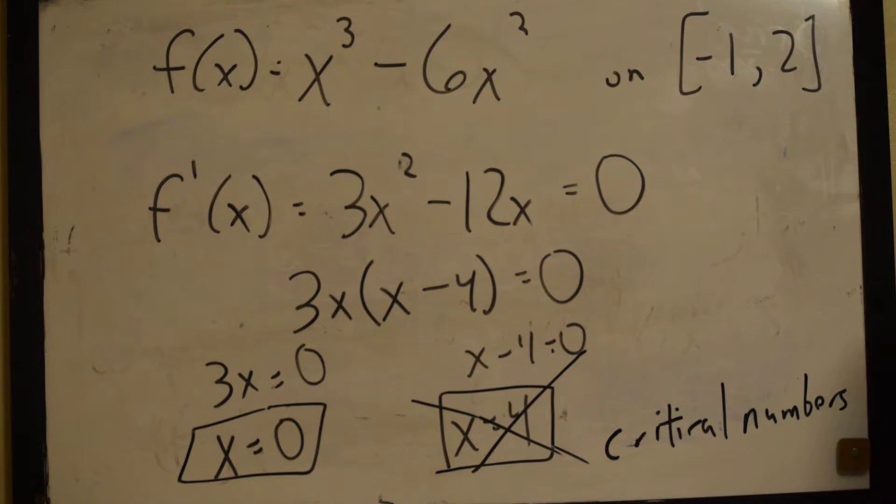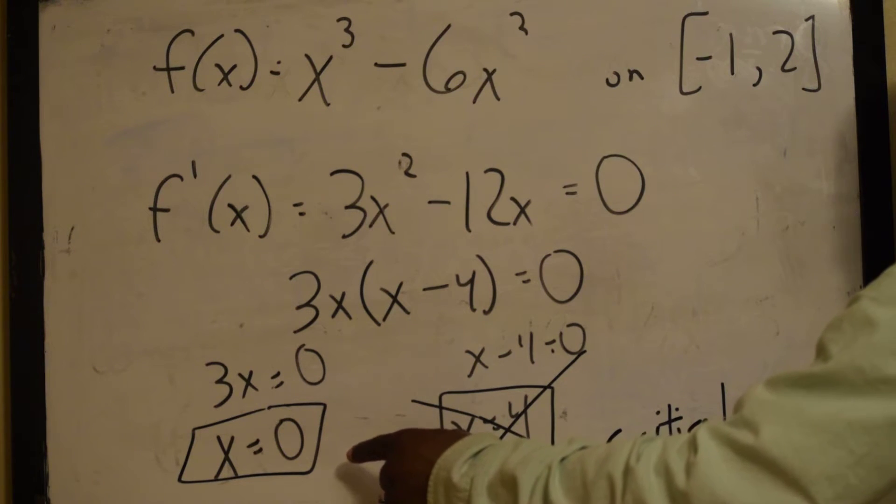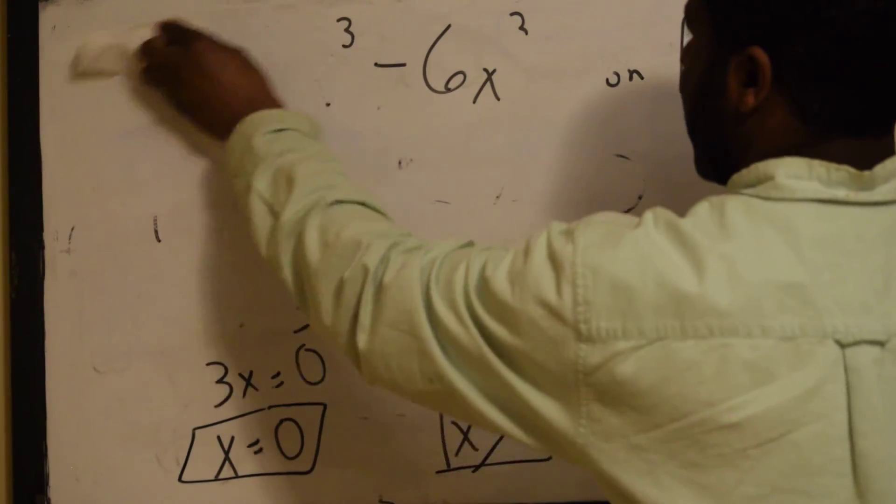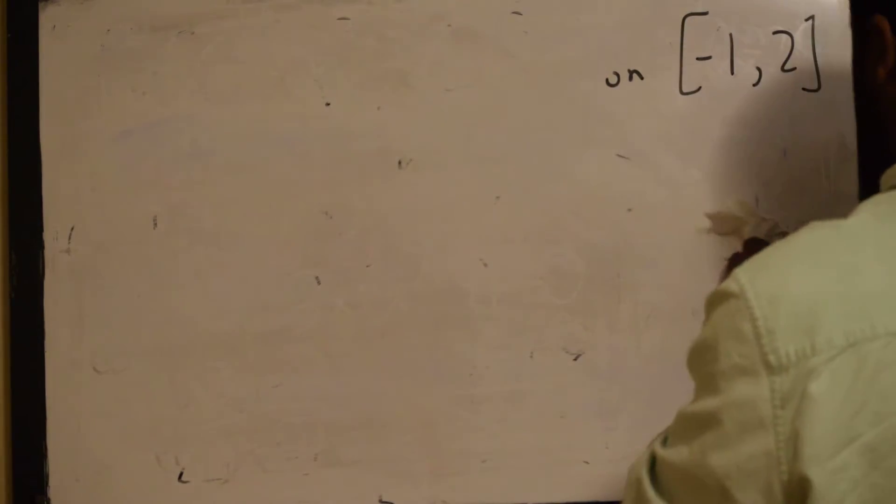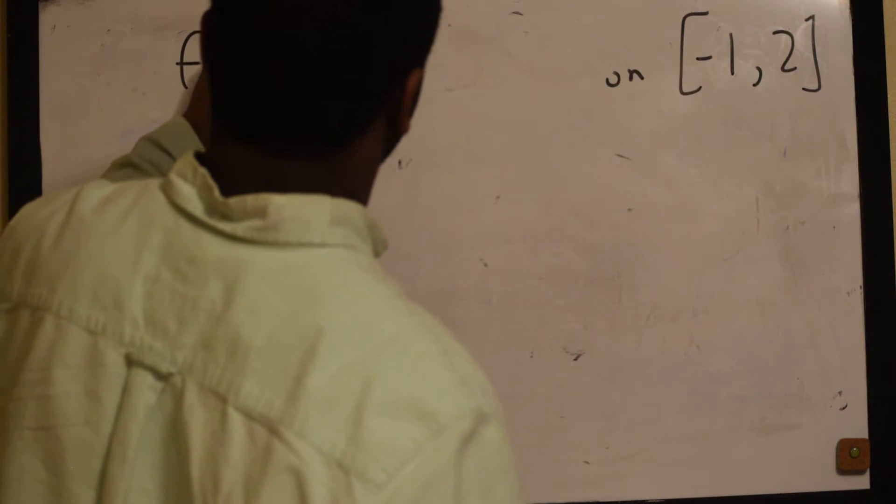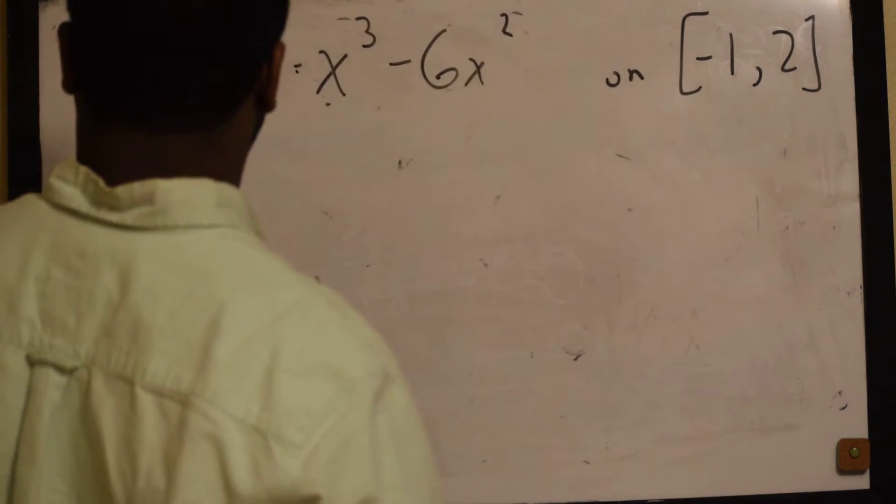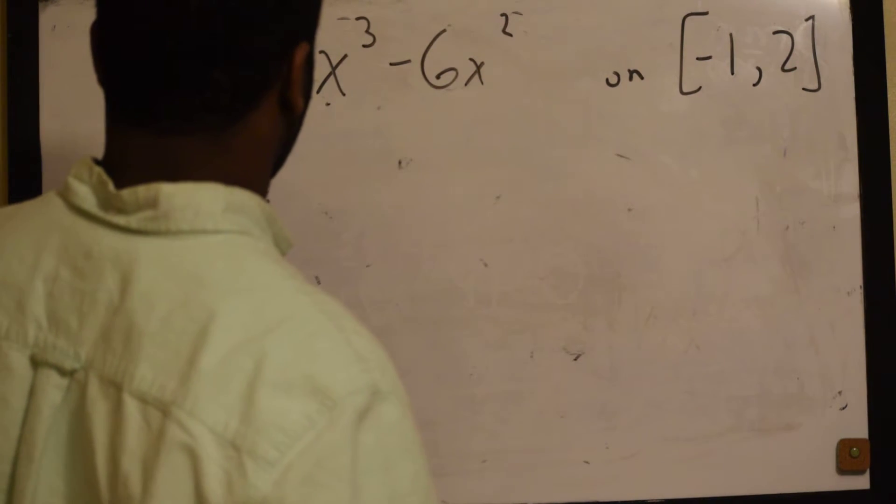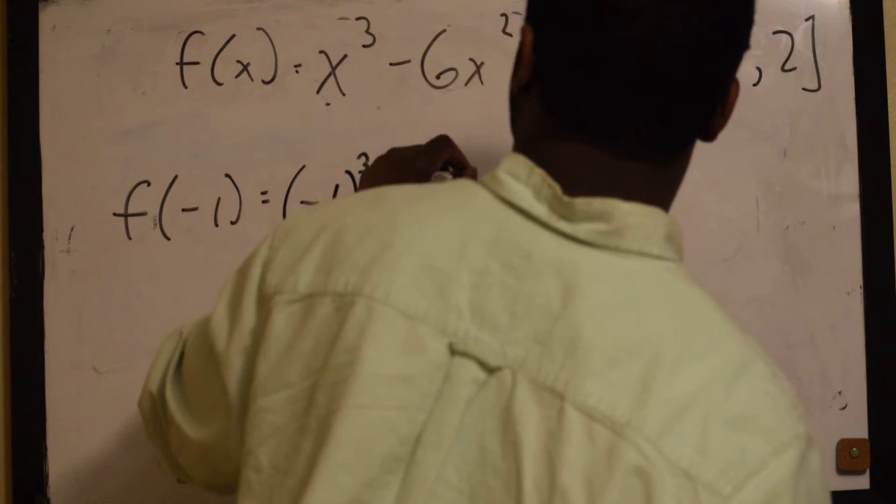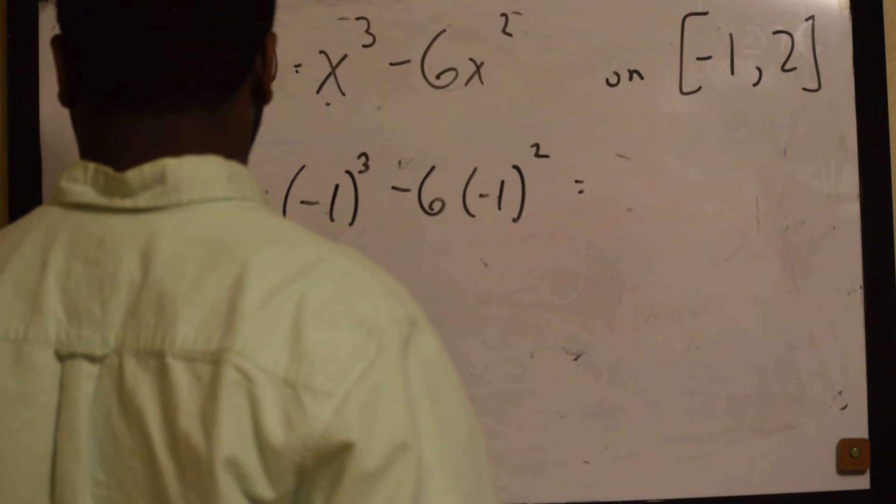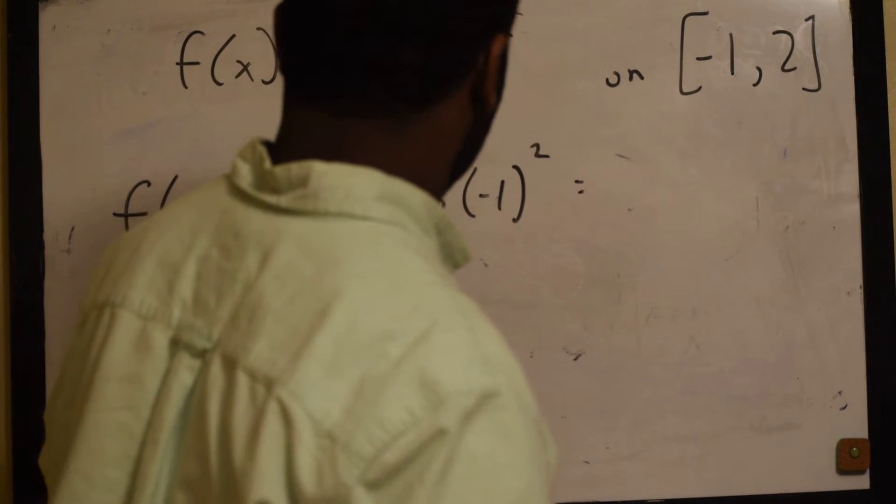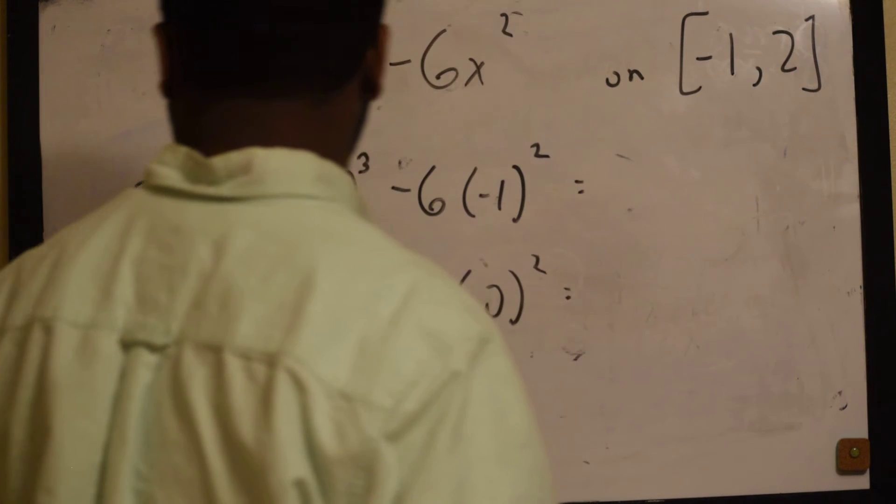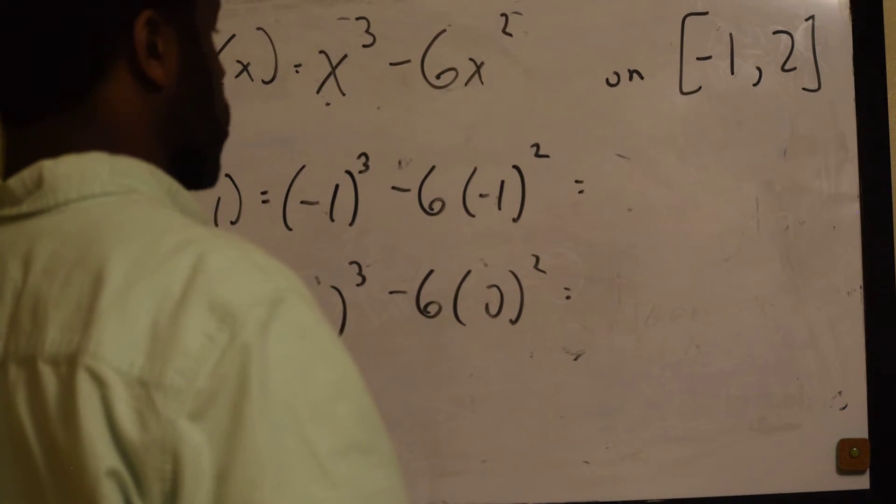Okay? So, now, we're only going to do x is equal to 0. So, now we come back and we evaluate everything. Alright? So, we're going to evaluate this. I'm sorry. Our original function was x cubed minus 6x squared. So, we have f of negative 1, f of 0. Remember, 0 is one of our critical points. And then, also, f of 2, which is our other endpoint.